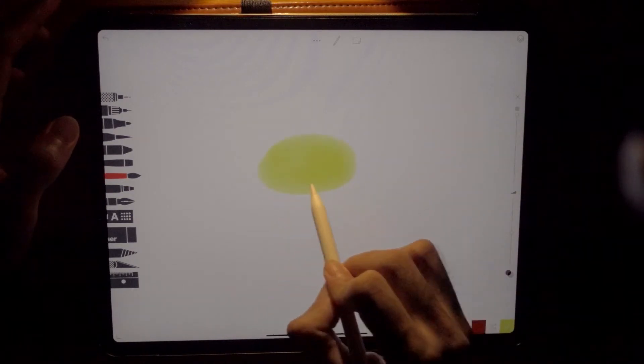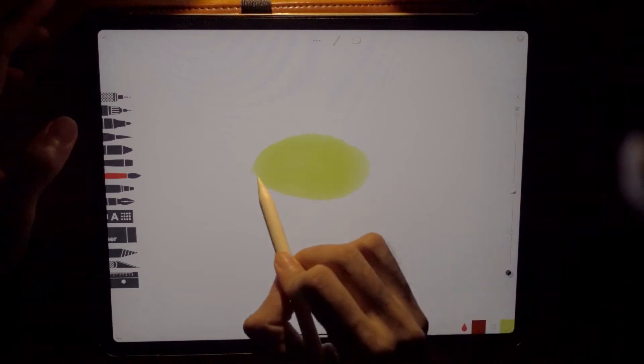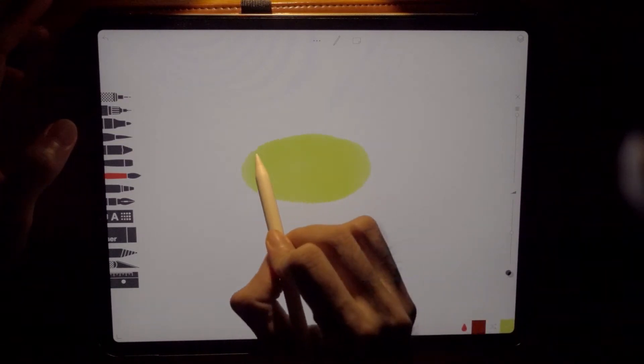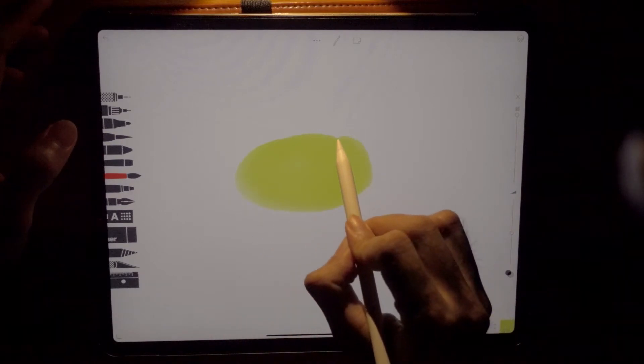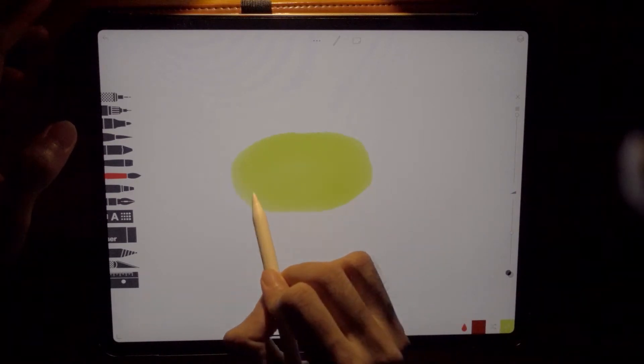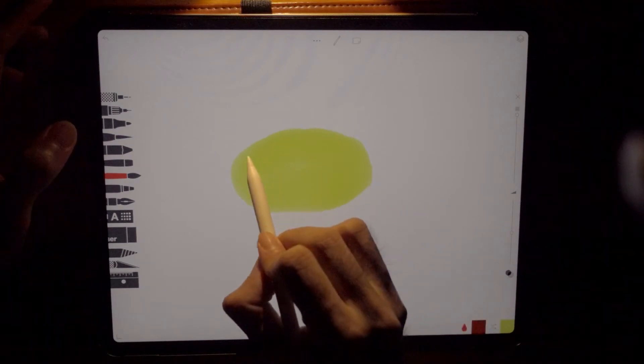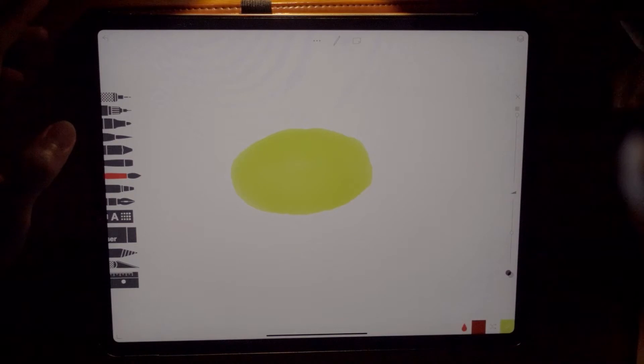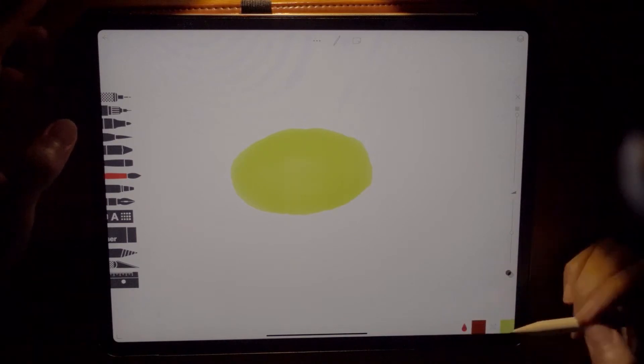And then, start to paint an oval shape like that. It doesn't have to be perfect, remember that. Okay, we are done. Now, let's dry that.